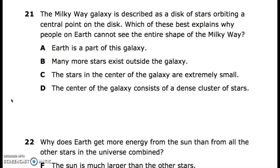21. The Milky Way galaxy is described as a disk of stars orbiting a central point on the disk. Which of these best explains why people on Earth cannot see the entire shape of the Milky Way? A. Earth is part of this galaxy, B. Many more stars exist outside the galaxy, C. The stars in the center of the galaxy are extremely small, D. The center of the galaxy consists of a dense cluster of stars.